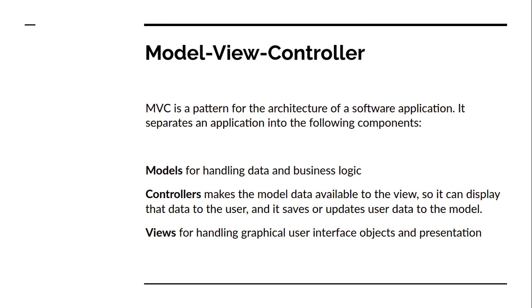The Model is responsible for handling data and business logic, and it is represented by Active Record in Rails. The Controller makes the model data available to the view so it can display the data to the user, and it saves or updates user data to the model.